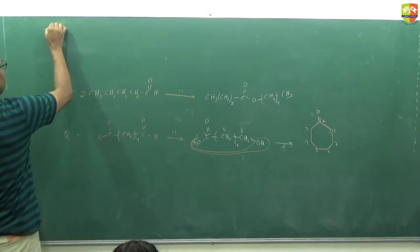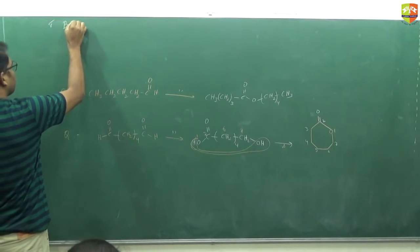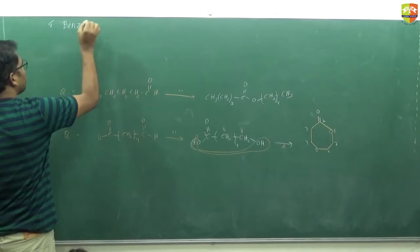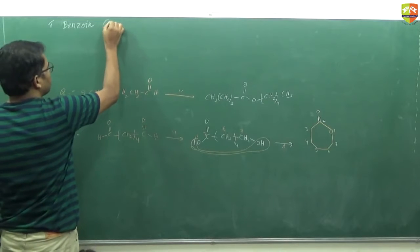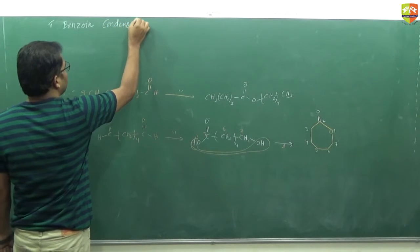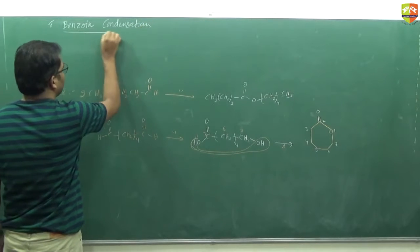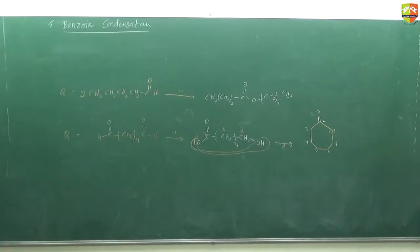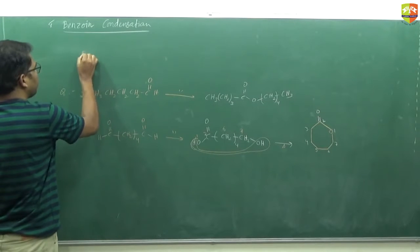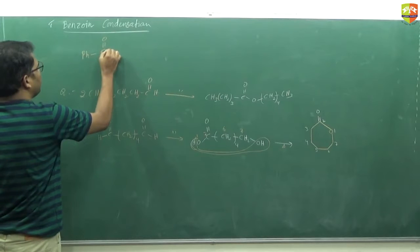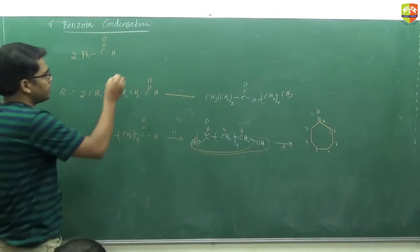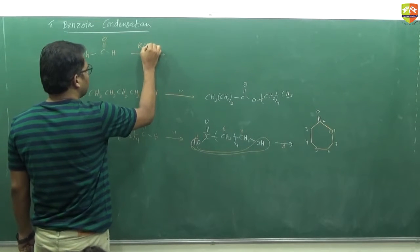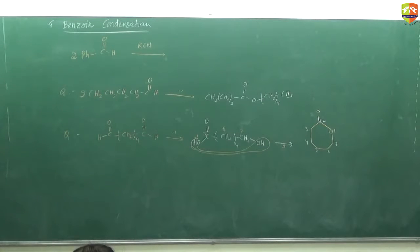Next reaction: write down benzoin condensation. Benzoin condensation is again a reaction of an aldehyde — generally we take benzaldehyde, PhCHO, two molecules of this. The reagent we use for this purpose is KCN.